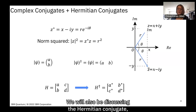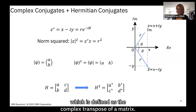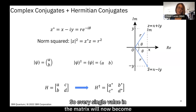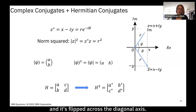We also define the Hermitian conjugate, which is the complex transpose of a matrix. If our matrix has entries a, b, c, d, the Hermitian conjugate — denoted by the dagger symbol — takes every value to its complex conjugate and flips the matrix across the diagonal axis, swapping b and c.